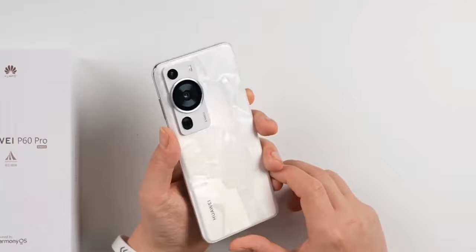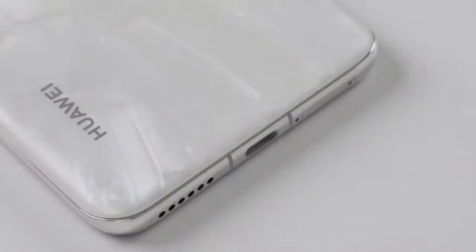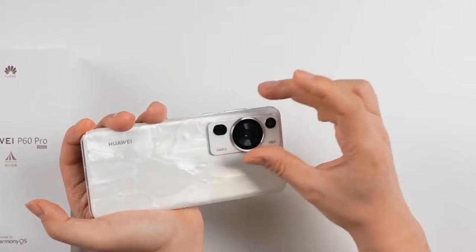You will find Huawei branding at the bottom, then at the top left side you will find camera module as well. There is one big ring and two small camera sensors and on right side there is flashlight.